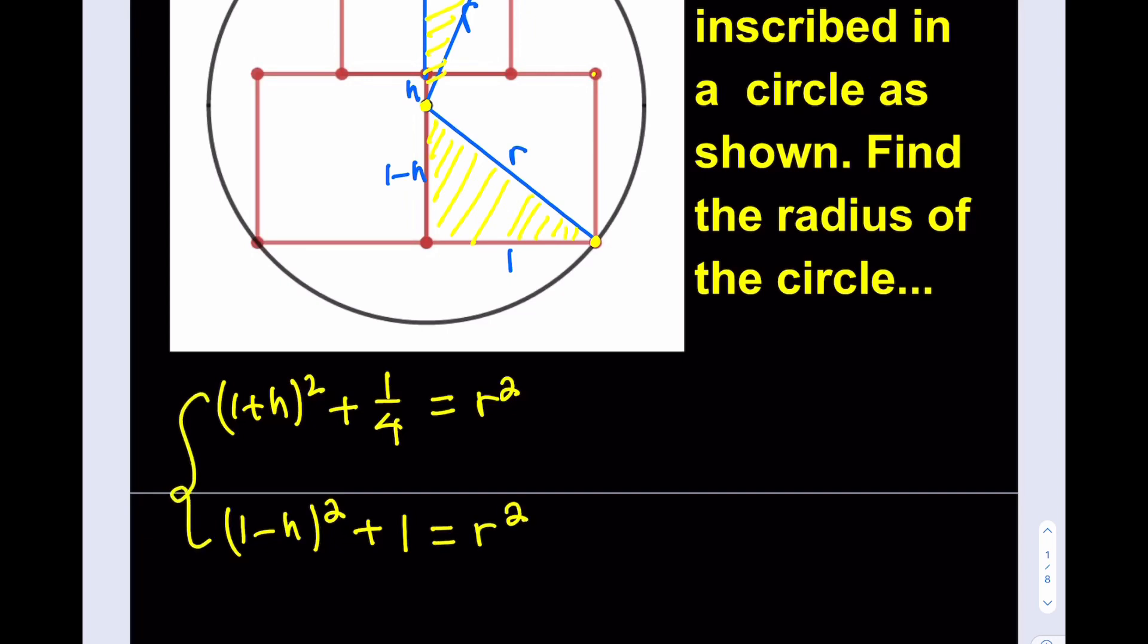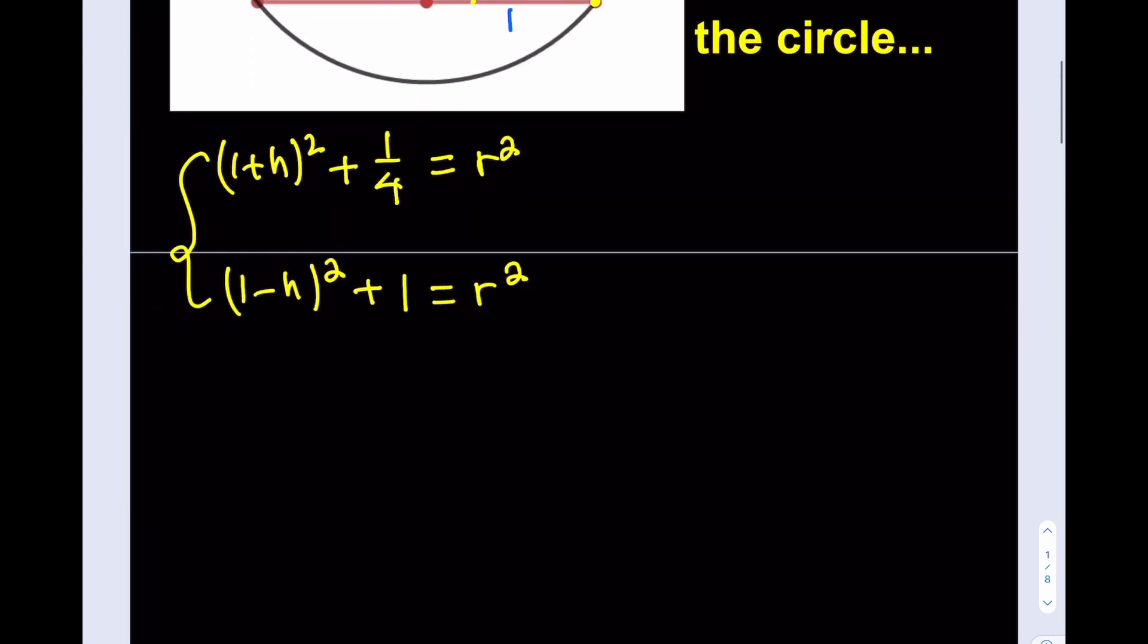Now, I got two relationships, and they both give me r², which means that if two things are equal to the same thing, then they're equal. All right? Let's say that one more time. If two things are equal to the same thing, then they're equal, so I can safely say that (1+h)² plus one-fourth is the same as (1-h)² plus one. Beautiful.